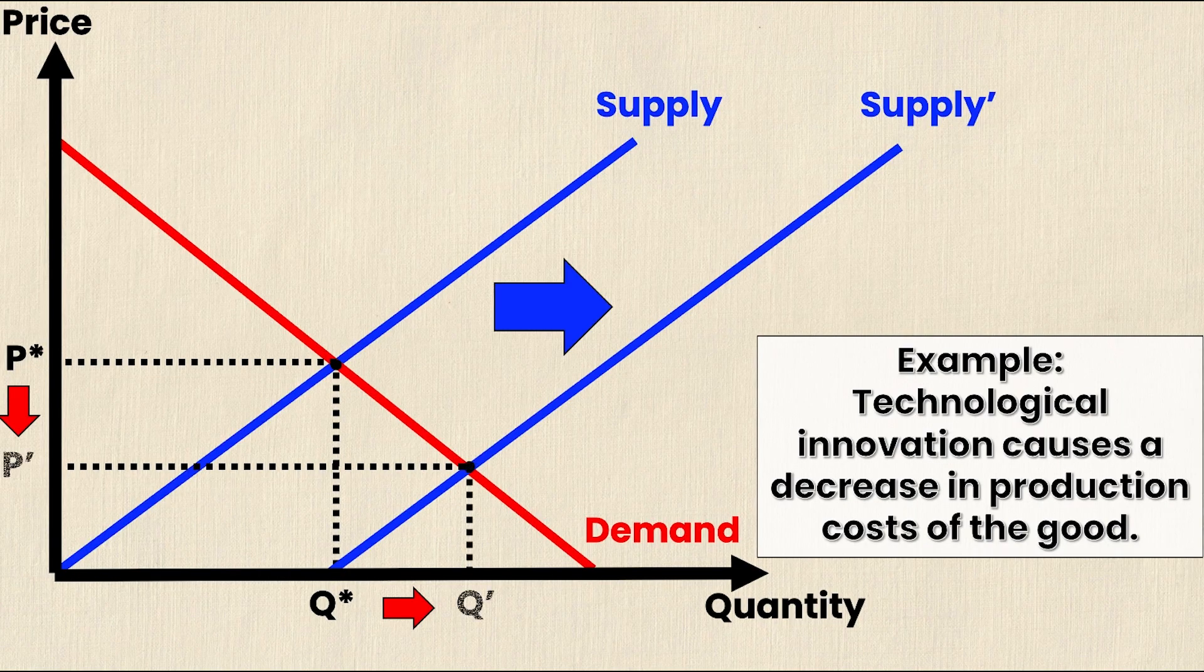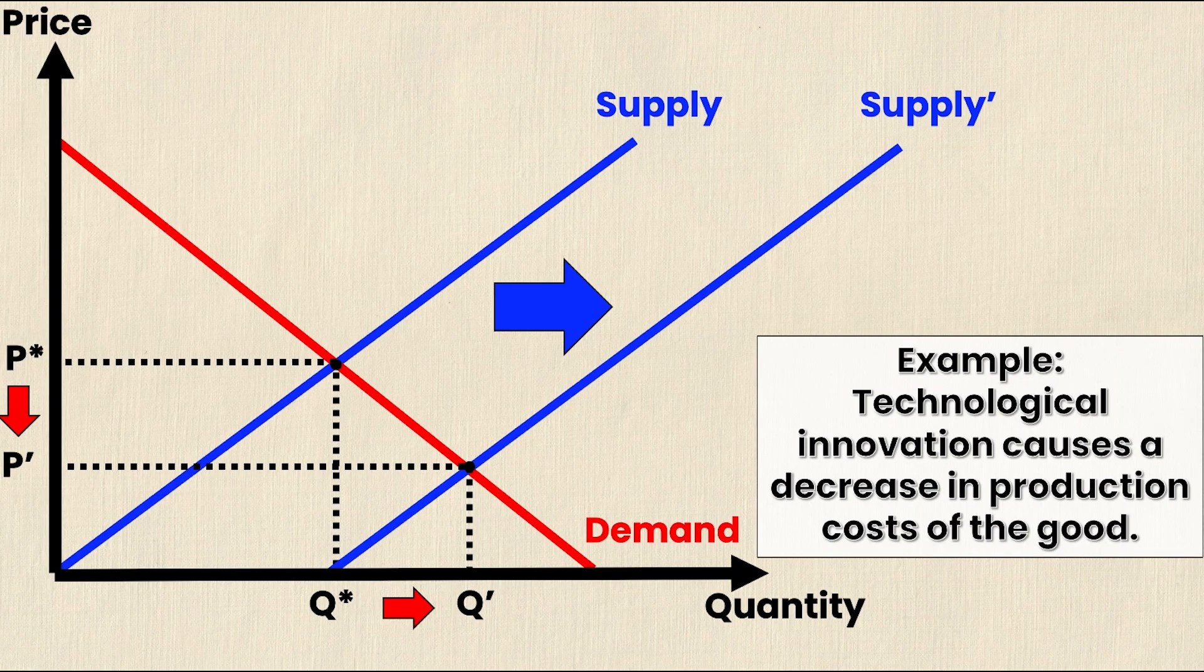We denote these points as p prime and q prime and once again for the same reason as before this just tells your professor that this is the new point not the original equilibrium. You'll notice that p has decreased or the price has gone down and that quantity has gone up.